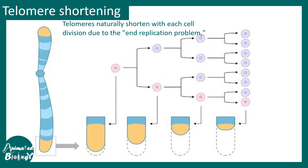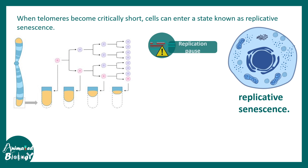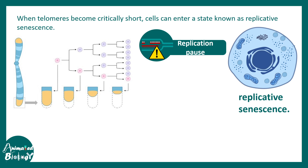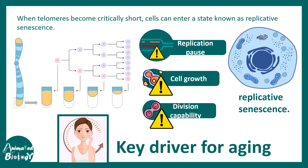Telomere shortening happens with each subsequent cell division. Telomeres naturally shorten with each cell division due to the end replication problem. Even with a regulatory mechanism to maintain telomere length, there is still progressive shortening. This progressive shortening of the telomere is thought to be one of the key reasons why cells undergo a process known as replicative senescence — a cellular state where cells fail to replicate their DNA, and growth and division capability is totally abrogated. This is thought to be the key driver of cellular aging.